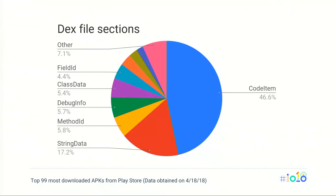Now let's take a closer look at the contents of DEX files. Within a DEX file, there are several sections containing different types of data. For the top 99 most downloaded applications in the Play Store, the largest section is the code item section containing the DEX instructions used by ART. The next largest section is the string data section, which contains string literals loaded from code, method names, class names, and field names. Combined, these two sections are around 64% of the DEX file, so they're pretty important areas to optimize.